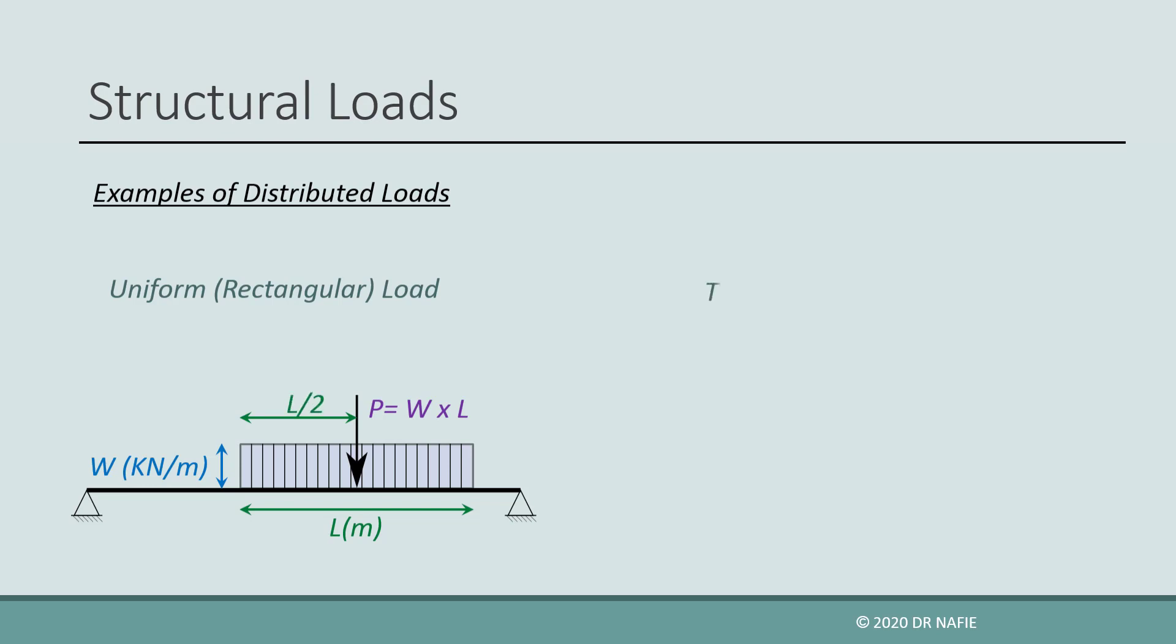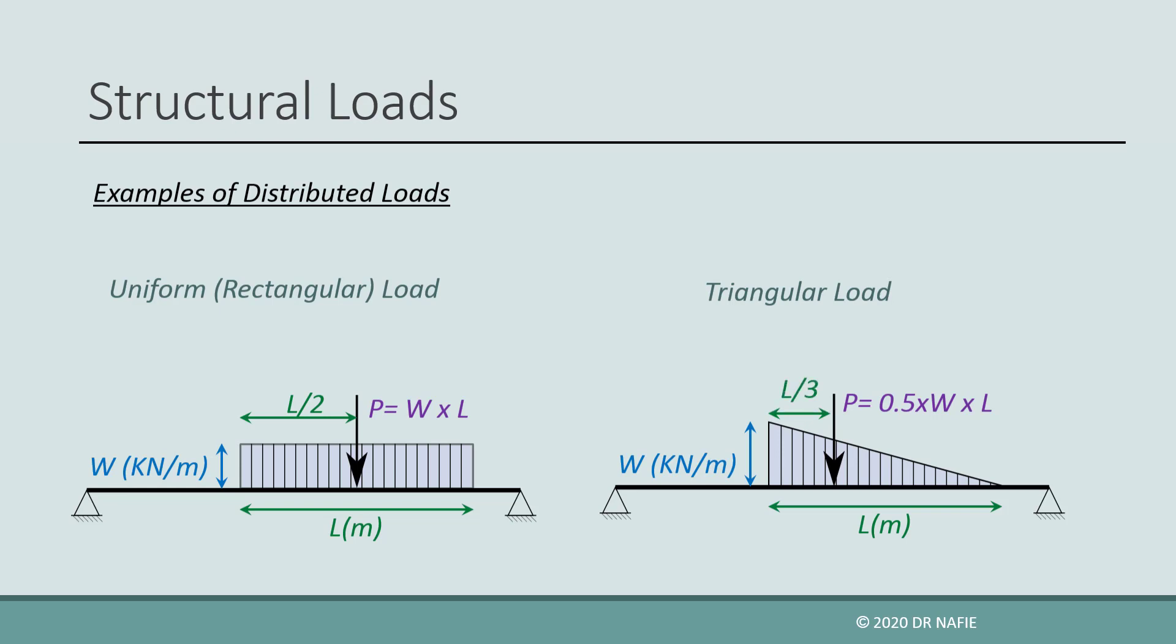Now, suppose that the pile of sand is rearranged such that the height at one end of the pile will correspond to weight W, and the height at the other end is zero. This will produce a triangular load. For a triangular load, the equivalent force for such a load will have a magnitude of half W multiplied by L, and it will be located one-third of L from the base of the triangle.